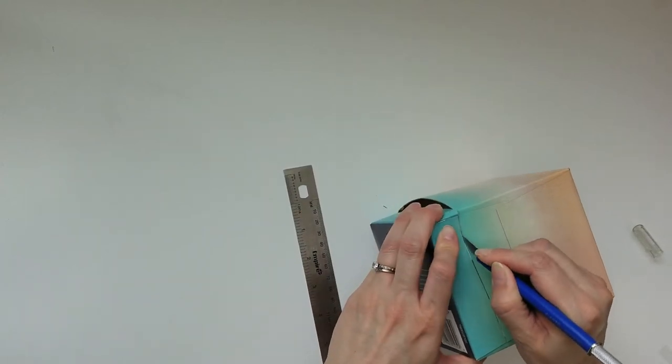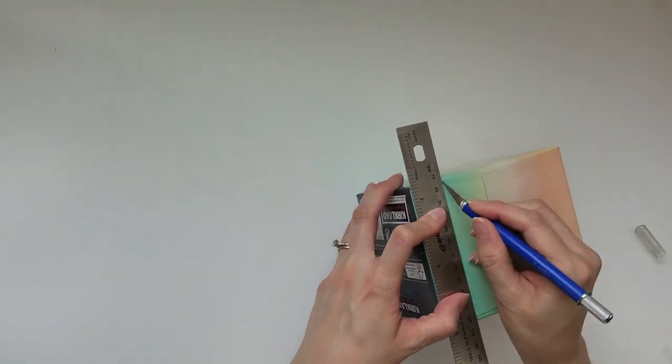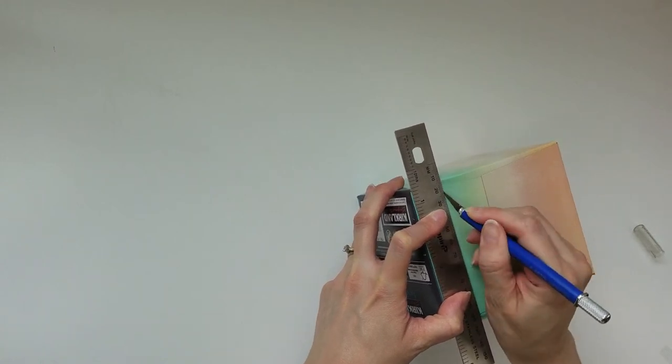If cutting your own box like I am, cut along three sides, keeping one side of the top attached.